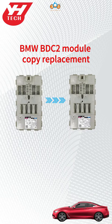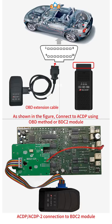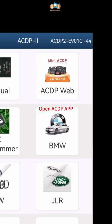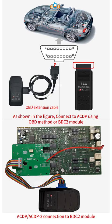How to use ACDP to copy-replace BMW BDC2 module data. As shown in the figure, connect to ACDP using OBD method or connect the BDC2 module. Open the ACDP app and confirm in the top right that a CDP programmer is bound, then click BMW.